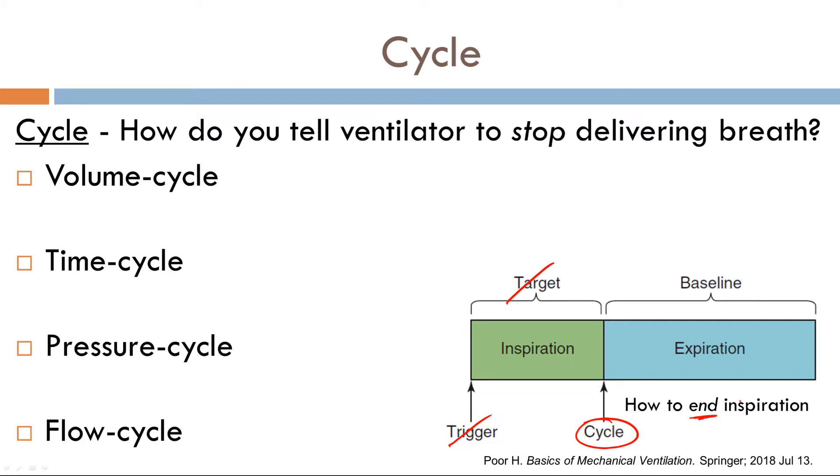Now we're going to go a little bit in depth into each of these different types of cycles, but just to briefly define them. What is volume cycle? Volume cycle means inspiration will continue until a set volume has been delivered. For example, if I've set it to 500 cc's, once 500 cc's has been delivered, boom, stops delivering your breath.